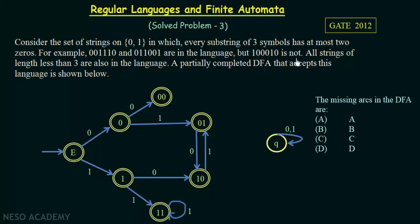All strings of length less than three are also in the language. The partially completed DFA has a starting state E and states 0, 00, 01, 10, 11, and Q. Among all these states, all except Q are final states. Q is the only non-final state. This is consistent with all strings of length less than three being in the language. We need to complete this DFA by finding the missing arcs, and we will be shown four options.